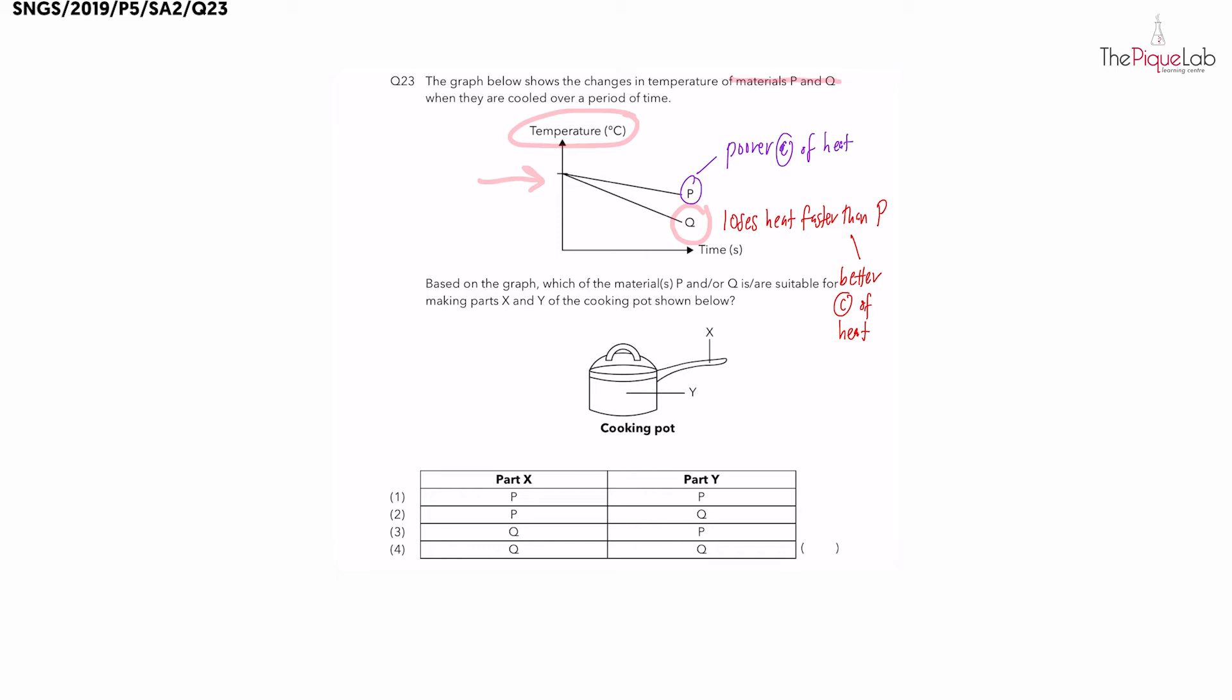Now let's read on. The question wants us to use the information from the graph to choose which material P or Q is suitable for making different parts of the cooking pot. So let's think about the purpose of the cooking pot. The pot itself, which is part Y here, must be able to cook the food very quickly.